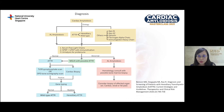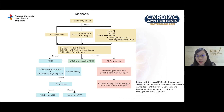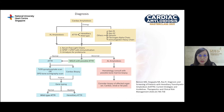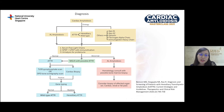Once a patient is suspected to have cardiac amyloidosis, the first step is to classify whether it is light chain or transthyretin amyloidosis. We check serum free light chain, serum and urine electrophoresis with immunofixation; if any are abnormal, we refer to a hematologist for consideration of bone marrow biopsy. If these investigations are normal, we proceed with endomyocardial biopsy or technetium pyrophosphate scan. Once transthyretin cardiac amyloidosis is confirmed, patients are sent for genetic counseling and testing. If a mutation in the TTR gene is found, the patient has hereditary ATTR — with implications for family members. If no mutation is found, they are classified as wild type.